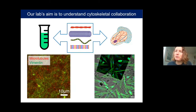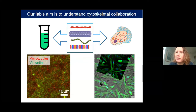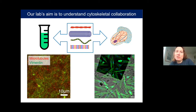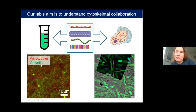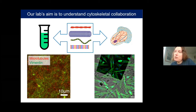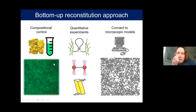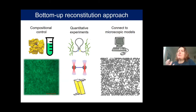Our lab's aim is to understand cytoskeletal collaboration of these four filamentous systems. We follow two main strategies: a bottom-up approach where we take components from the cell and reconstitute them in the test tube, and also studying cells directly by measuring mechanical properties and manipulating cytoskeletal composition. A big advantage of the reconstitution approach is that it allows excellent connection to theoretical models, especially more microscopic ones, because of precise compositional control and the amenability to quantitative experiments over different scales — from optical tweezers to molecular tension sensors.